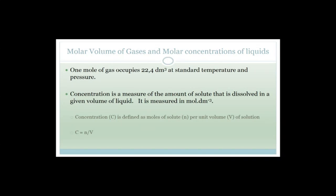Let's talk about molar volume of gases and molar concentration of liquids. One mole of any gas occupies 22.4 dm³ at standard temperature and pressure — it doesn't matter if it's hydrogen, helium, nitrogen, oxygen, ammonia, or any gas whatsoever. Concentration is a measure of the amount of solid dissolved in a given volume of liquid, measured in moles per dm³. Concentration is defined as moles of solute per unit volume: C = n/V, where n is number of moles and V is volume in dm³.